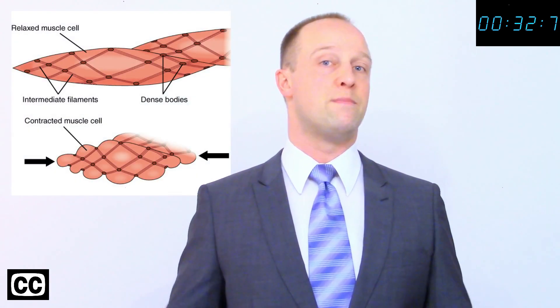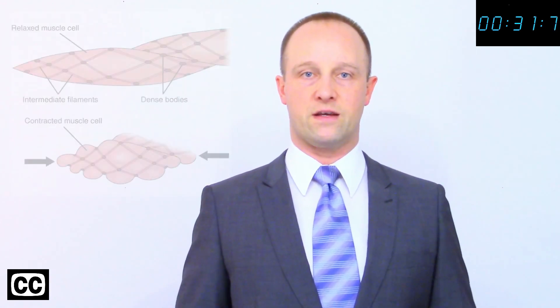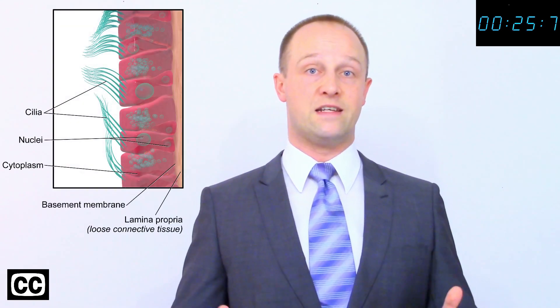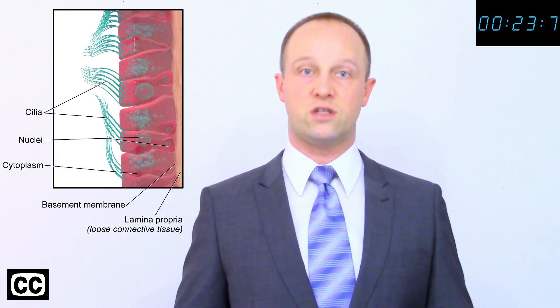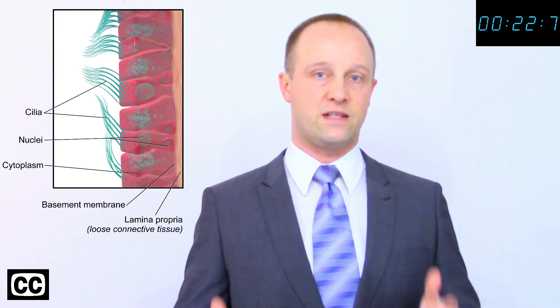Specialization makes cells better suited to specific jobs, with unique subcellular features. Muscle cells can contract, making them good for moving things. Nerve cells are very long, making them good at transmitting signals. Sperm cells have a tail, allowing them to propel themselves.